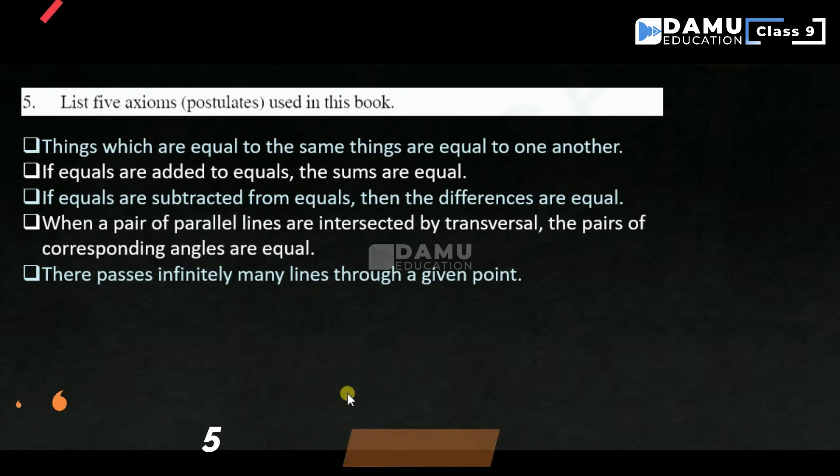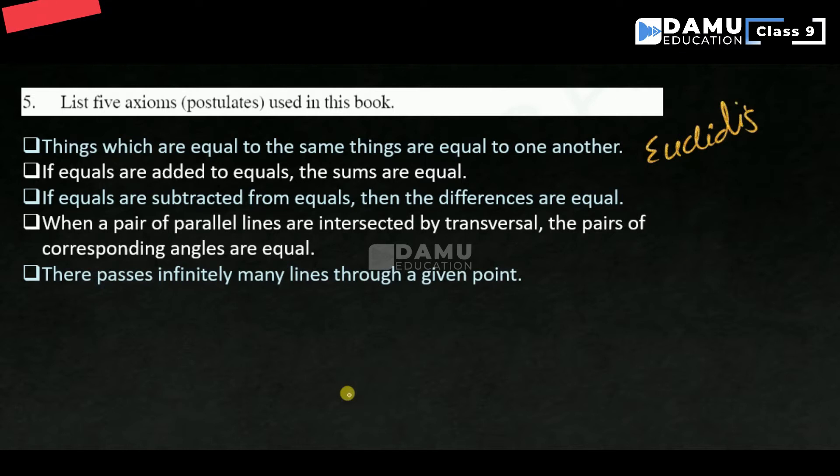We have written Euclid's axioms. Here are Euclid's axioms in geometry, or Euclid's postulates. First one: Things which are equal to the same things are equal to one another.